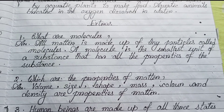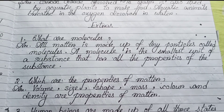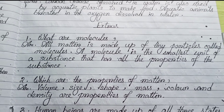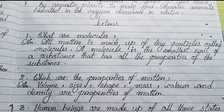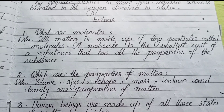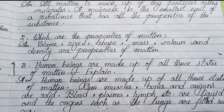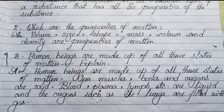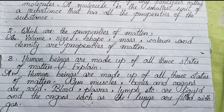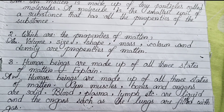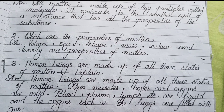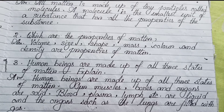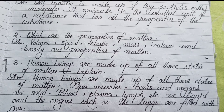Number 2: What are the properties of matter? Volume, size, shape, mass, color, and density are properties of matter. Number 3: Human beings are made up of all three states of matter — explain. Human beings are made up of all three states of matter.